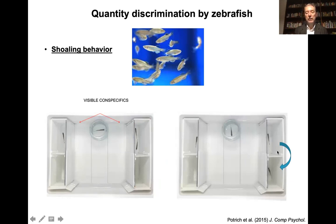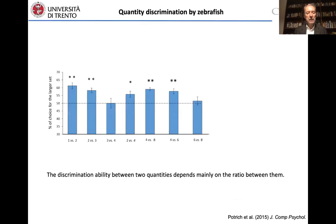And the task for the fish is to approach one or other, that is a free choice test, in order to see whether on the basis of memory, not just sensory stimulation, they can show a preference for the larger numerosity.